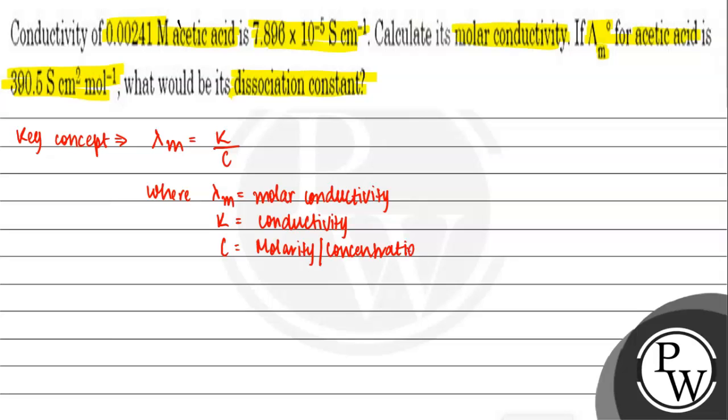And we know that degree of dissociation, alpha, is equal to lambda m divided by lambda m naught.